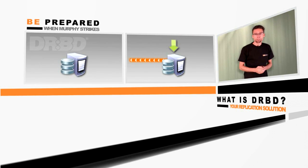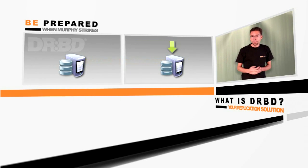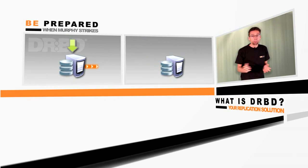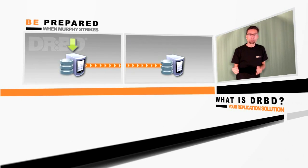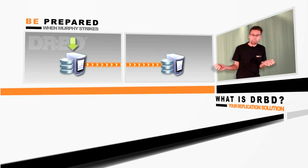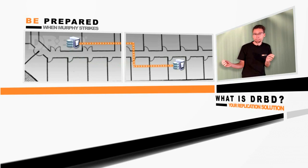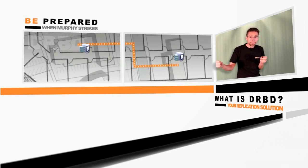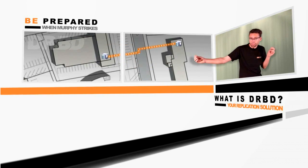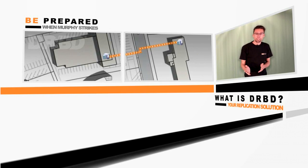And of course, fail back is just as easy. What's cool about it is we can pull clusters apart so our nodes can run in separate fire areas or even in separate buildings. All it takes is a network connection.